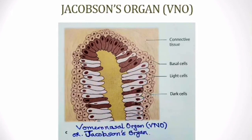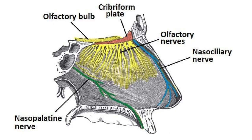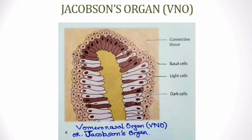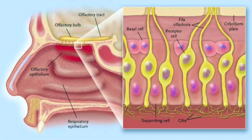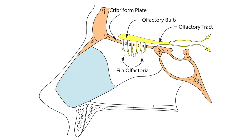Histologically, Jacobson's organ is very similar to the olfactory epithelium. Just as in the olfactory epithelium there were three types of cells, here too there are three types. The receptor cells behave like first-order sensory neurons of the first cranial nerve — their peripheral processes are dendrites embedded in the nasal mucosa while their cytons lie in the mucosa, and central processes pierce the cribriform plate. There are around 16 to 20 million such neurons, which bundle into 16 to 20 fila olfactoria.